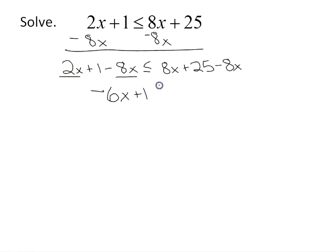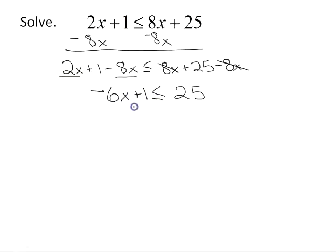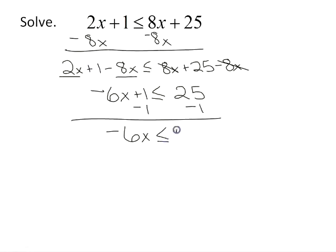I still have the plus 1, so I keep it there, and I keep my inequality symbol the same. On the right side, the 8x terms add up to 0, leaving just 25. Now, to get x by itself I need to get rid of the plus 1, so I subtract 1 from both sides. That gives me negative 6x is less than or equal to 24.